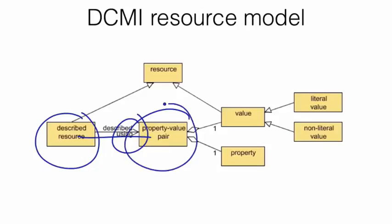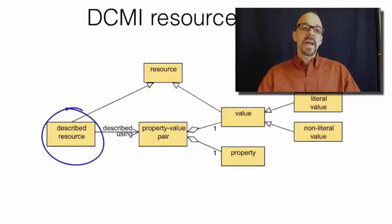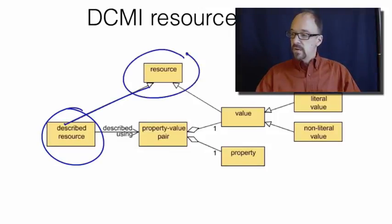So that is how to read these diagrams. A described resource is the thing that you are describing using Dublin Core. For example, the Mona Lisa. So a described resource is a resource, and resource is a generic term here. Essentially, a resource can be anything. It means a thing, any kind of a thing.